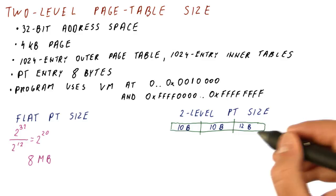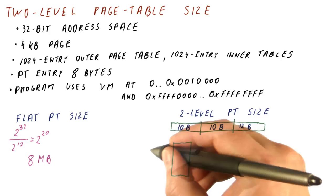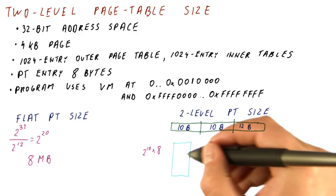So we know that we need to have the outer page table and its size will be 2 to the 10th entries times 8 bytes per entry here, which ends up being 8 kilobytes for the outer page table.